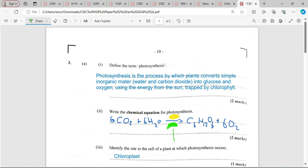Next, identify the site in the cell of a plant at which photosynthesis occurs. Photosynthesis takes place in the chloroplast of the plant cell.